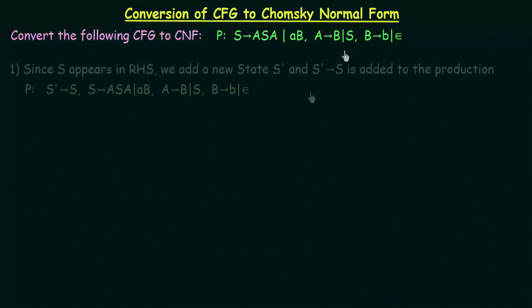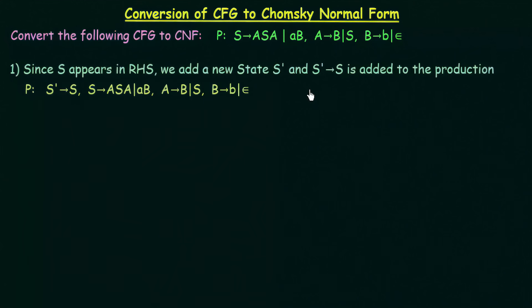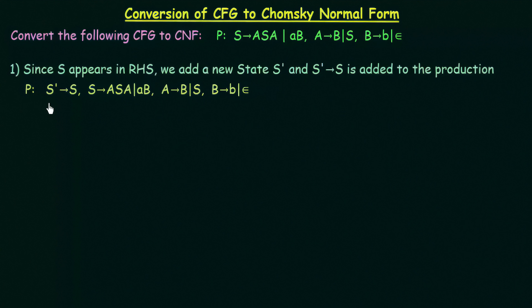In step one, we check if S appears in the right hand side of any production. We see that S appears here and also here on the right hand side. So we add a new state S' and create a new production S' gives S. The remaining productions stay the same. That is how we perform the first step.